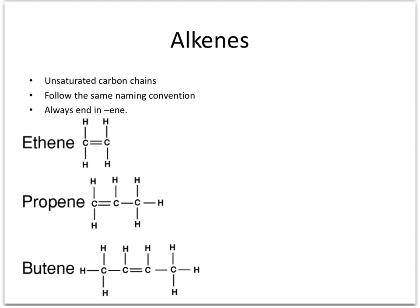The first alkene is ethene, with the chemical formula C2H4 — note the double bond in the centre. Afterwards, we have propene with the chemical formula C3H6, and here is its displayed formula. Finally, we have butene with the chemical formula C4H8.